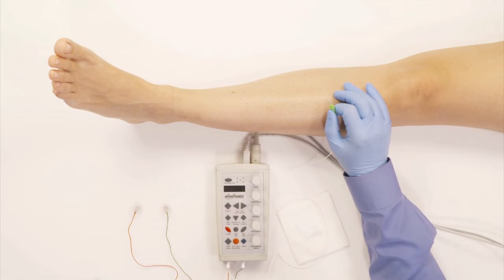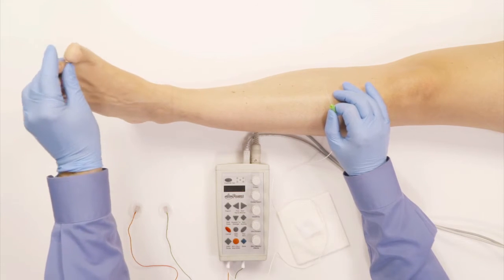Now we're going to do the extensor digitorium brevis muscle, which is a muscle innervated by the peroneal nerve and actually serves to bring your toes upwards.